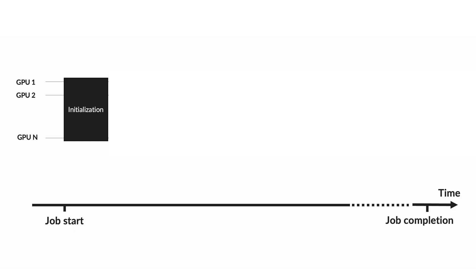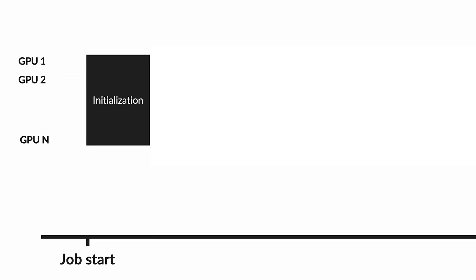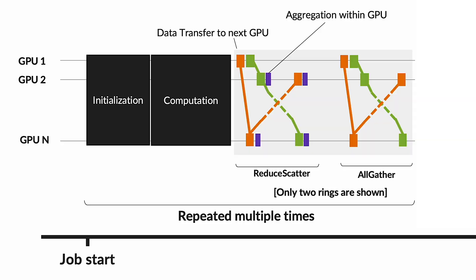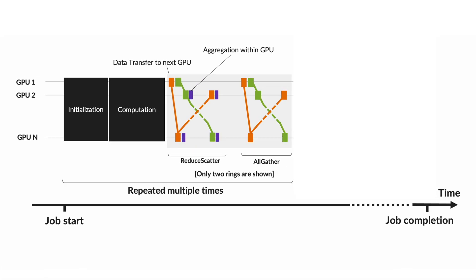ML training requires iteration-level atomicity. For ML training across GPUs, a job is divided into multiple iterations, and each iteration involves several steps. First is initialization, where GPUs prepare data and resources for computation. Then computation, where GPUs perform computations on their assigned portion of data. Next is data transfer, where intermediate results or gradients are transferred between GPUs — shown as green and orange lines — which might involve direct GPU-to-GPU communication or transfer to the host CPU. We also have aggregation within each GPU, potentially performing operations like reduce-scatter, which reduces data and scatters it across multiple GPUs, or all-gather, which gathers data from all GPUs to each GPU.